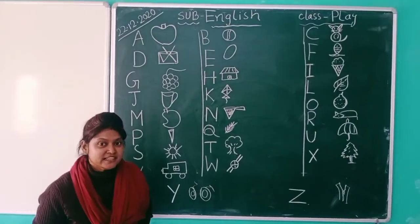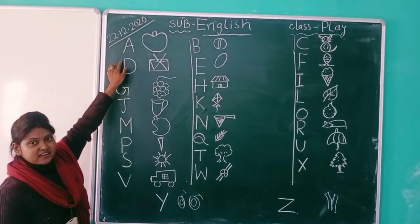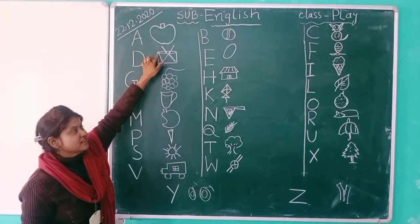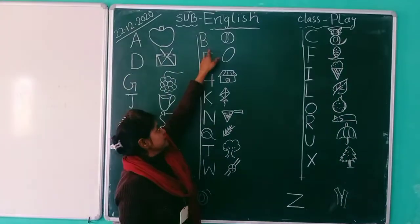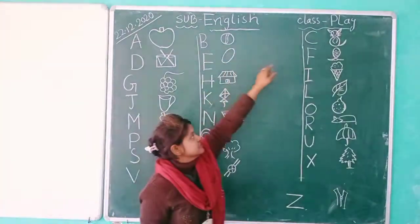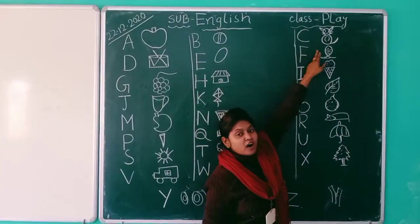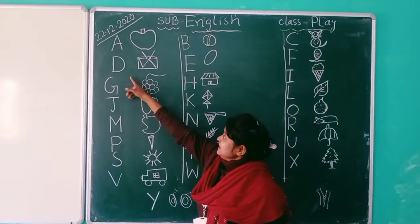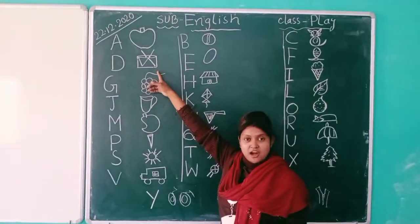At first, A. A for apple. B. B for ball. C. C for cat. D. D for dog.